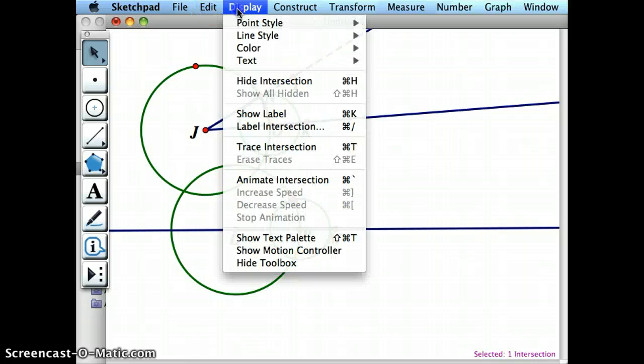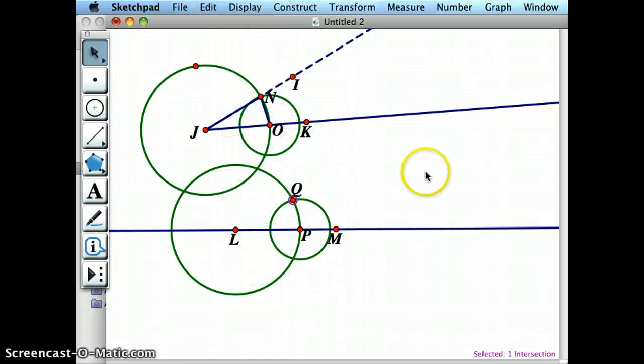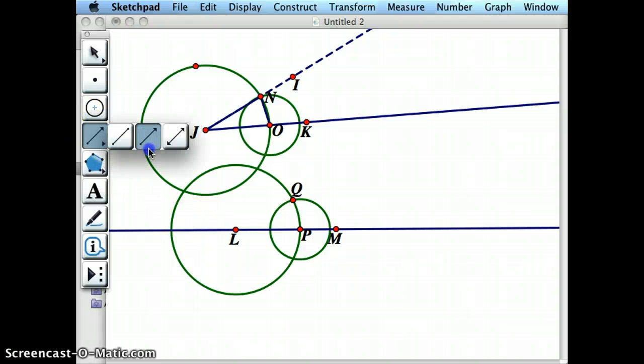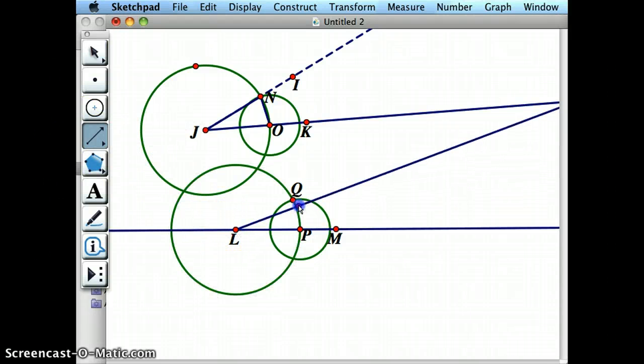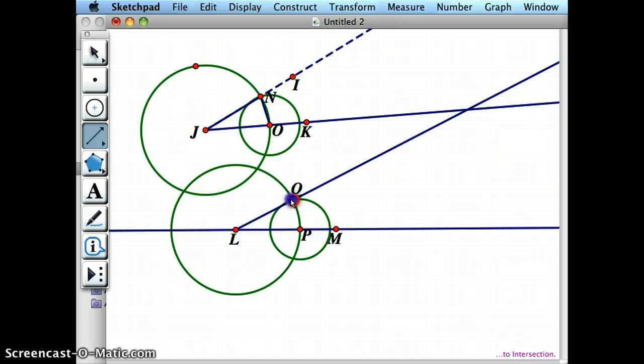So I'm going to go ahead and show that label and then I'm going to create the ray that goes from L and through Q.